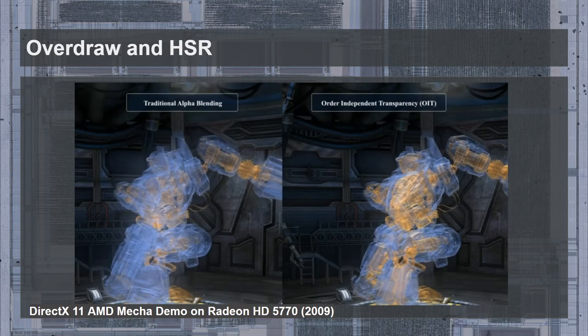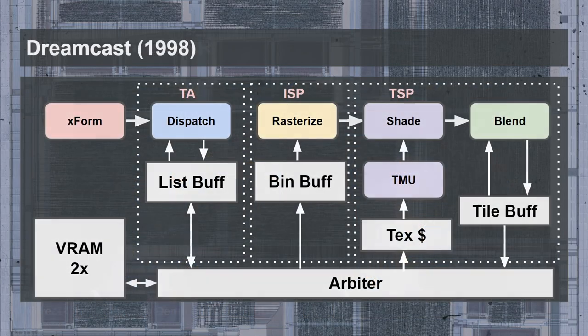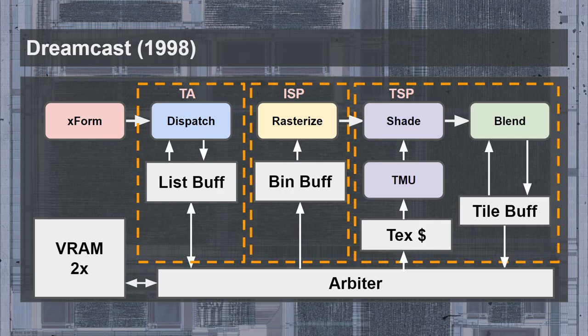Let's look at how the Dreamcast GPU actually implemented this architecture. The GPU is broken up into three main blocks: the Tile Accelerator, or TA; the Image Synthesis Processor, or ISP; and the Texturing and Shading Processor, or TSP. The Tile Accelerator was responsible for translating the display list into something easier for the rest of the GPU to process, as well as performing the binning — a step performed in software for the older desktop PowerVR GPUs.